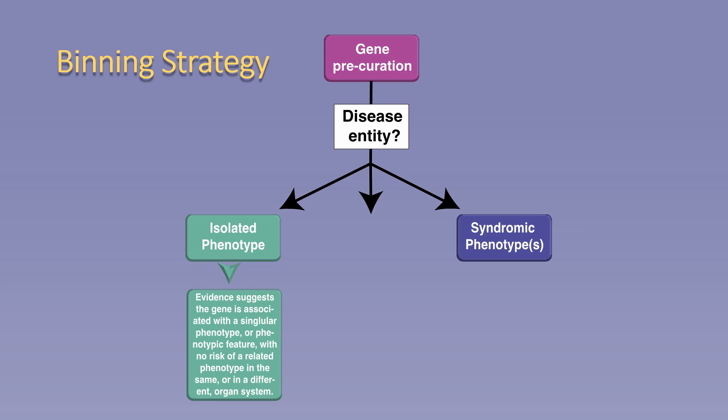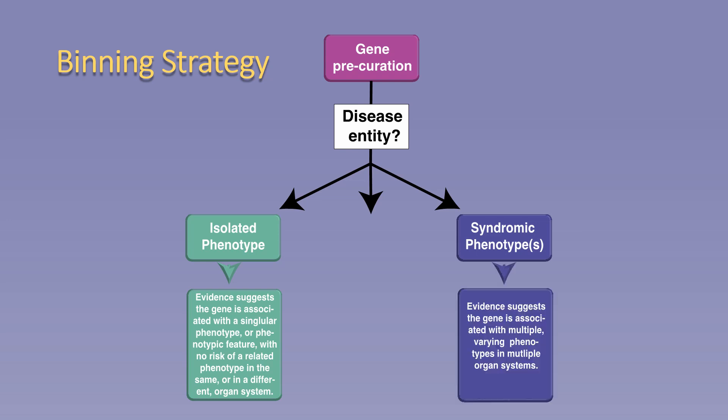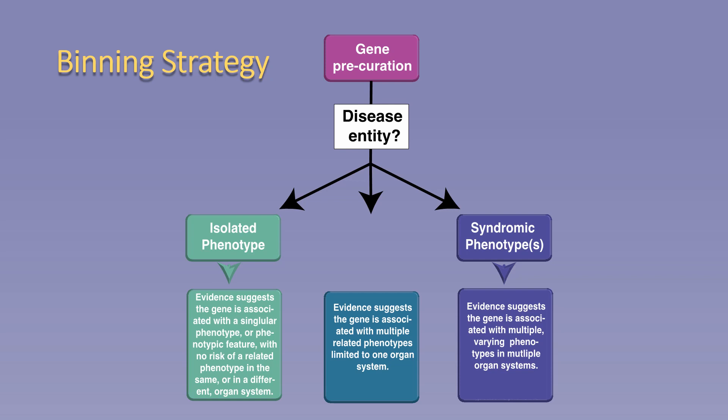Or, the gene is associated with a syndrome, in which evidence suggests the gene is associated with multiple varying phenotypes and multiple organ systems. However, some genes may be associated with a different presentation, in which evidence suggests the gene is associated with multiple related phenotypes limited to one organ system. In these cases, the binning would suggest the gene is associated with a variable phenotype in a single organ system, and may require development of new nomenclature, done in conjunction with your gene curation expert panel.